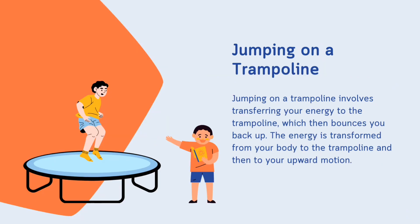Now we will move to our next example: jumping on a trampoline. Jumping on a trampoline involves transferring your energy to the trampoline, which then bounces you back up. The energy is transformed from your body to the trampoline and then to your forward motion.